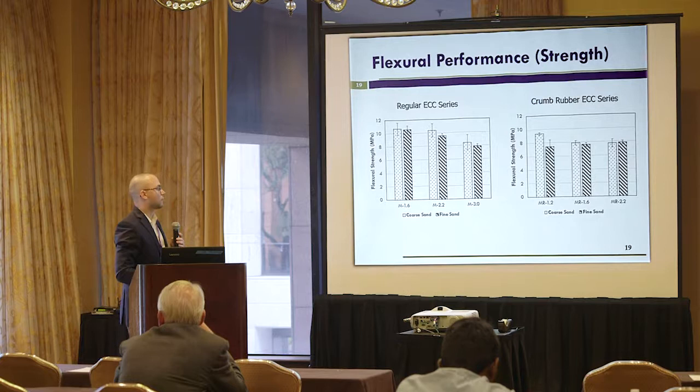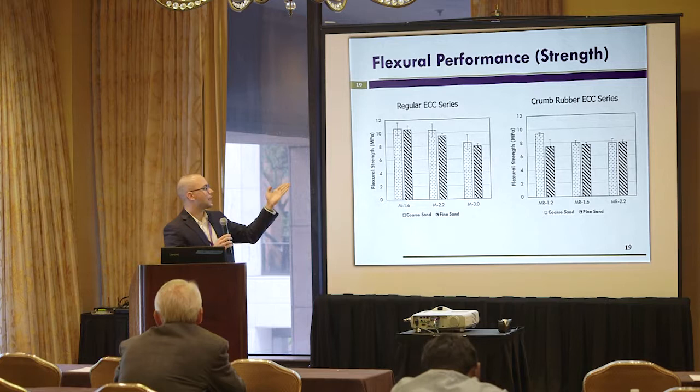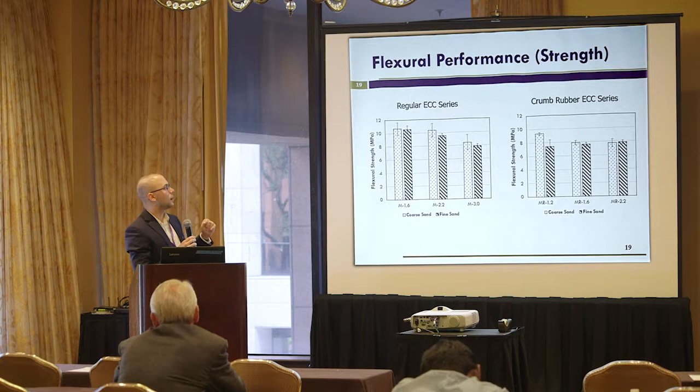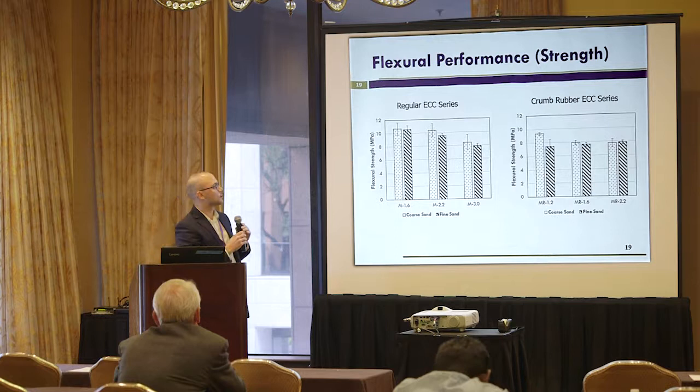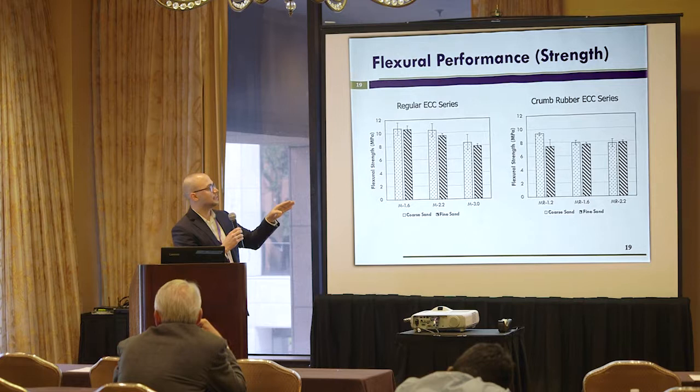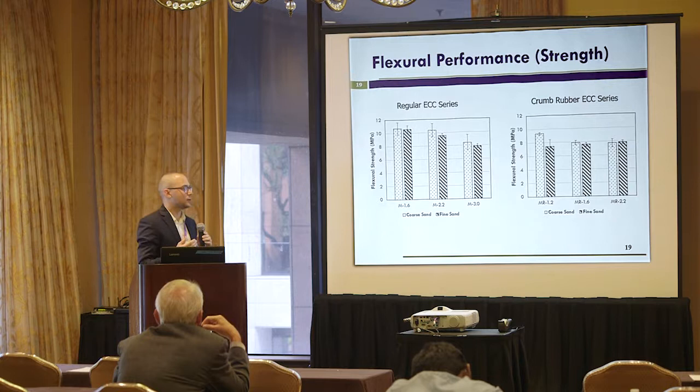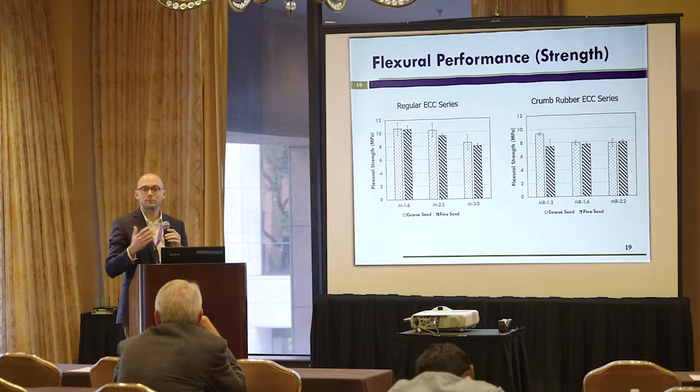In terms of flexural performance, a similar effect is seen — as fly ash content increases, flexural strength decreases. However, as shown in the next slide, while strength is sacrificed when fly ash is added, ductility is actually enhanced, which is very interesting. In the crumb rubber series, especially with coarse sand, there is a tendency for strength to decrease with increasing fly ash, while the fine sand specimens showed less difference between mixes.